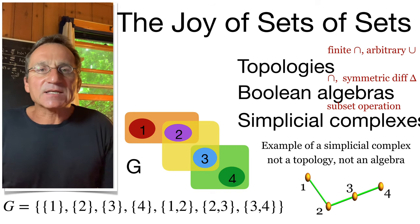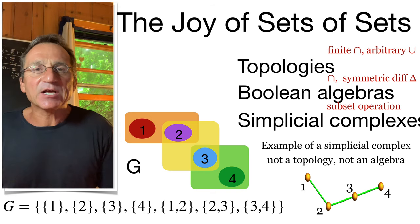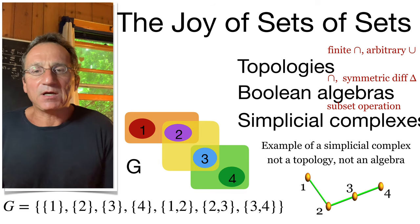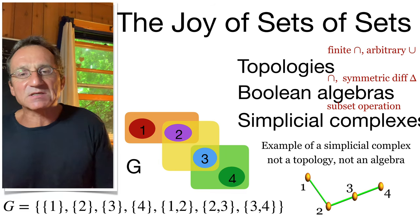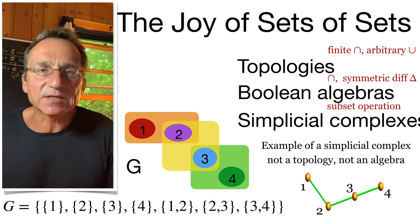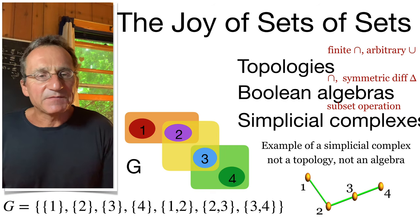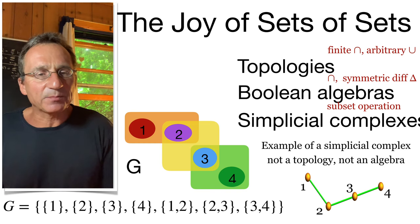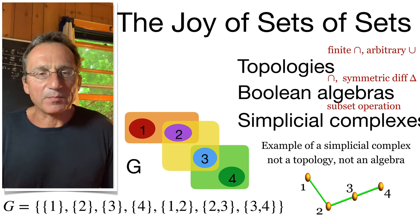Let's start with a finite set of sets. It's a very general notion. It could be a topology, it could be a sigma algebra like in probability theory, it could be a simplicial complex like in topology. We see here an example of seven sets which happen to be a simplicial complex.